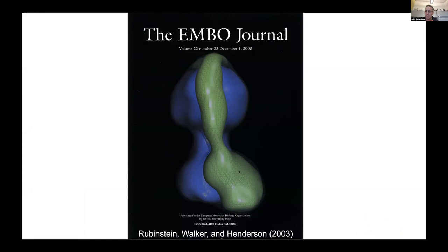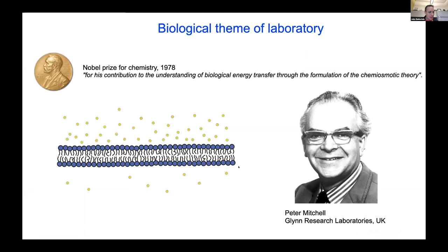The biological theme of my laboratory is the membrane protein complexes that exist at energized membranes. The idea that a membrane could support an electrochemical gradient of ions was first proposed by Peter Mitchell in his chemiosmotic hypothesis. To my mind, this is one of the few really paradigm-changing ideas in biology, because after this point we could no longer think of cells as bags of enzymes, but instead as highly compartmentalized structures with electric fields and ion gradients across membranes.